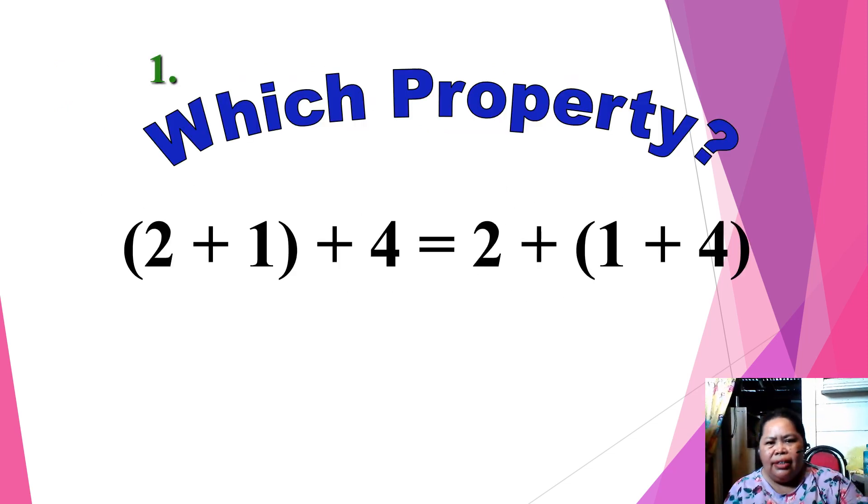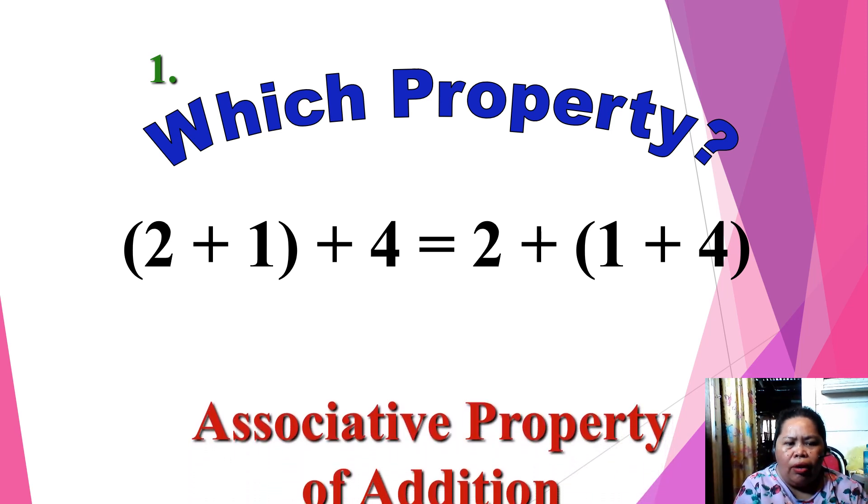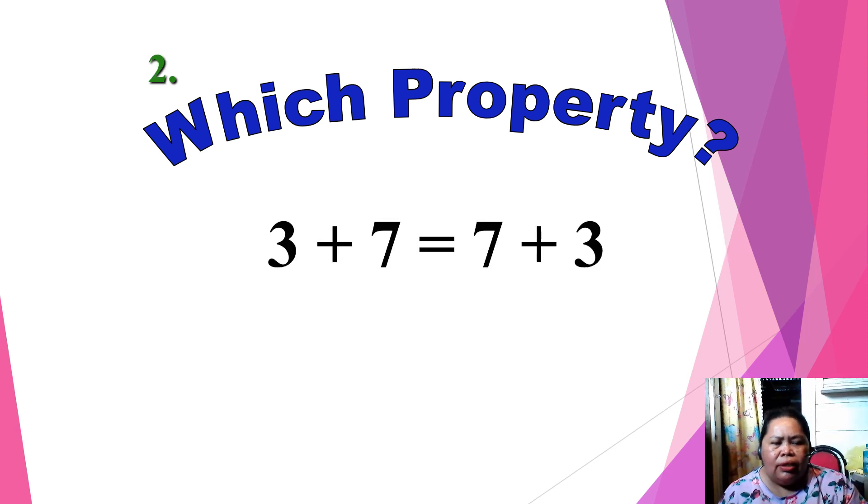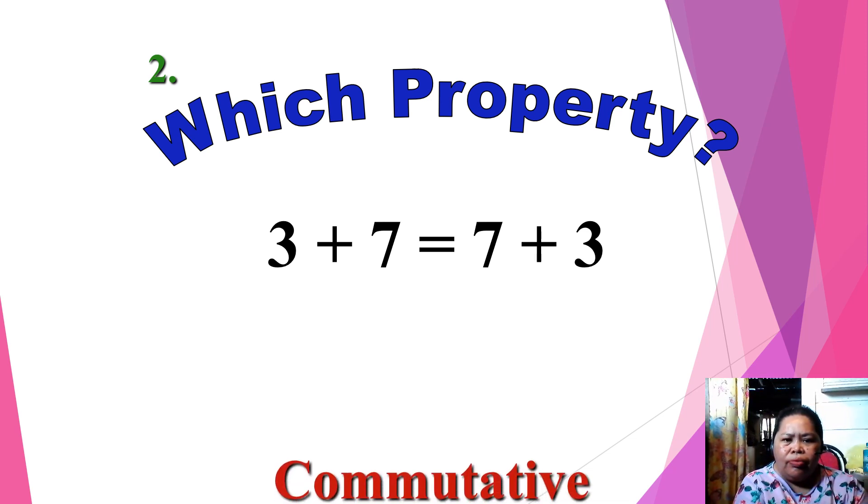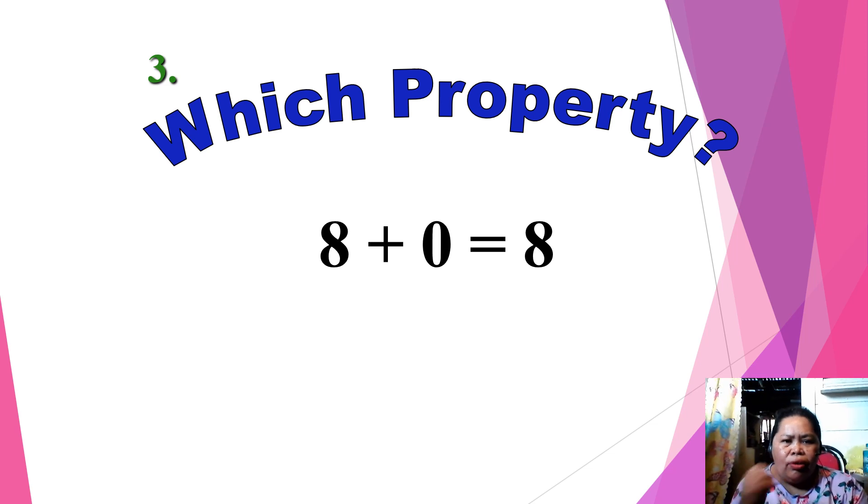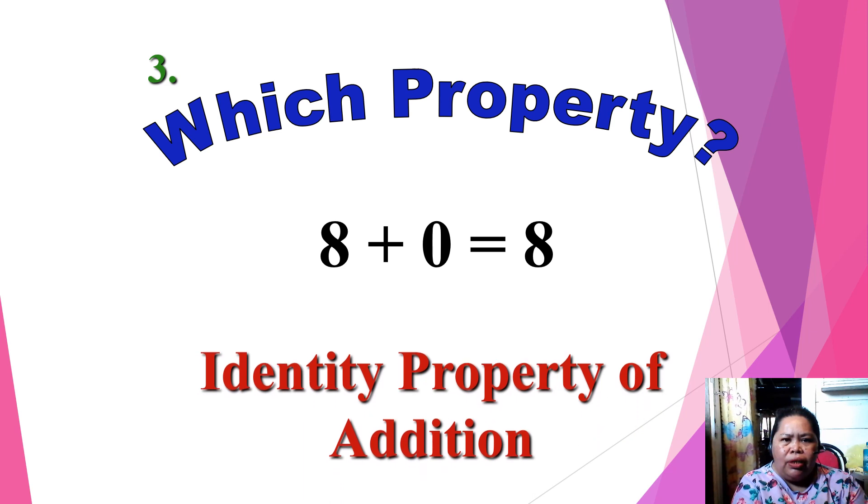Which property is this? We have grouping here. What do you think is the answer? It is associative property of addition. Number 2. Which property? 3 plus 7 is equal to 7 plus 3. The answer is commutative property of addition. Which property is this? 8 plus 0 is equal to 8. It is identity property of addition.